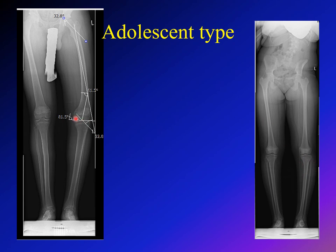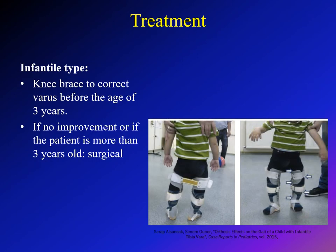Two more radiograph examples of adolescent Blount, both unilateral. In unilateral Blount the affected side is usually shorter than the other, and you can clearly see the difference in limb length in both examples.